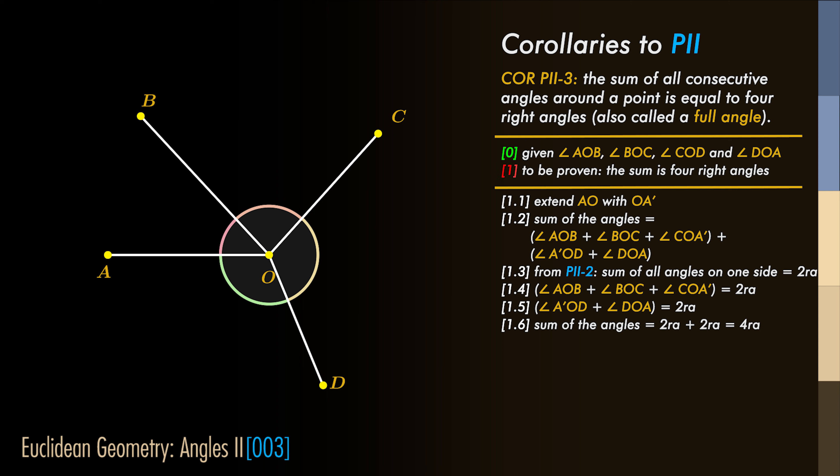Let's extend AO with AOA'. We now have that the sum of the four angles is equal to the sum of all the angles on one side of AA', and the sum of all the angles on the other side of AA', as you can see in this complicated formula.